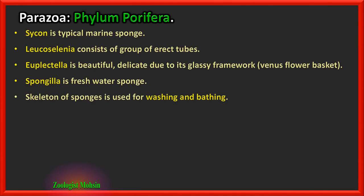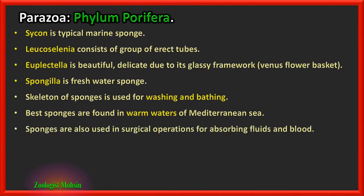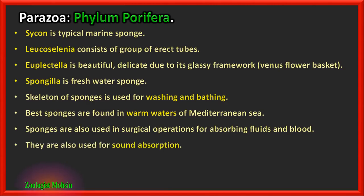The skeleton of sponges is used for washing and bathing purposes by humans. The best sponges are found in the warm waters of the Mediterranean Sea. Sponges are also used in surgical operations for absorbing fluids and blood, and for sound absorption in buildings.